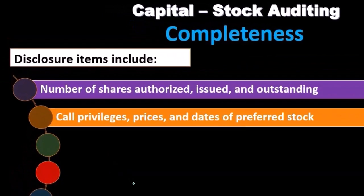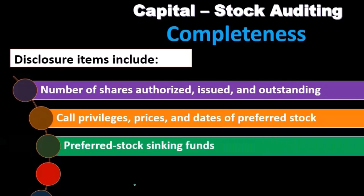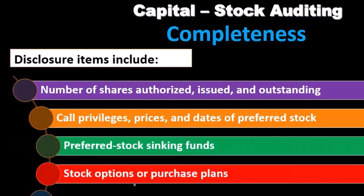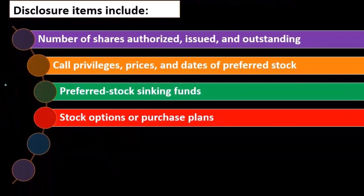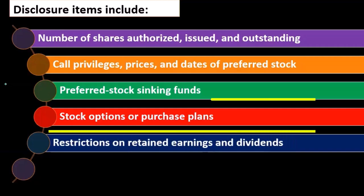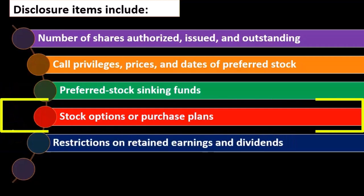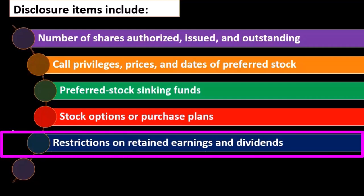We also need to disclose call privileges, prices, and dates of preferred stock, preferred stock sinking fund — and of course these would only be applicable if we have preferred stock. Additionally, any stock options or purchase plans need to be disclosed.